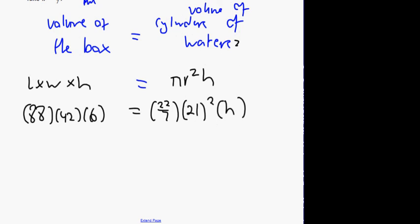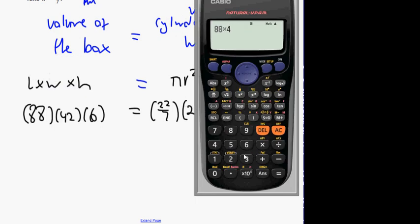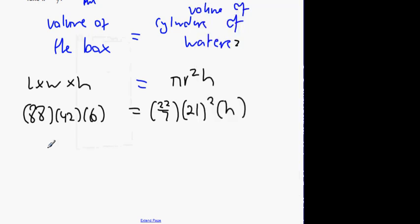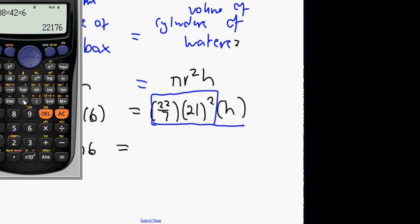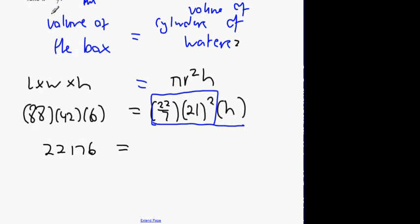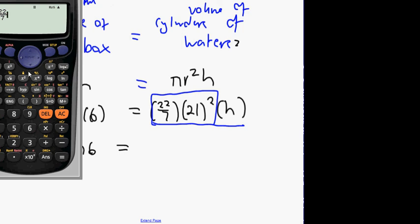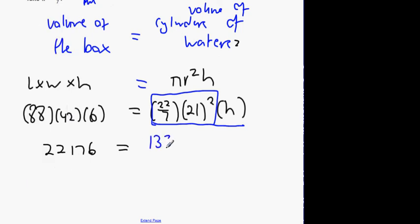Can anybody tell me what 88 by 42 by 6 is? Beat you to it. 22,176. Now, here's the tricky one. I can't put all of this into the calculator, can I? Why not? The H. So, why don't I just put this much in? When am I going to put that much in? What do I get? It's 22 over 7, right? How many of you got 66? I'll take that. So, it's 21 squared. And let's see what comes out. What'd you say? 1,386. So, 1,386 H.